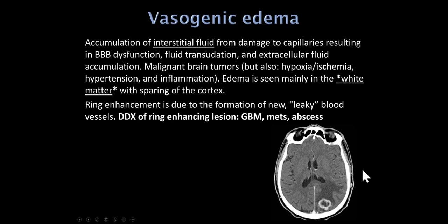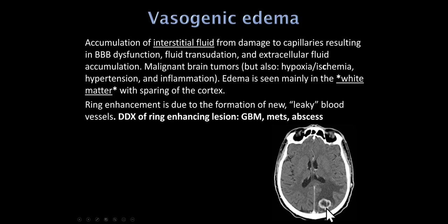Vasogenic edema is often due to a mass like a brain tumor but can be seen in other conditions. Fluid accumulates in interstitial locations — classically white matter — sparing the cortex, due to damaged capillaries causing interstitial fluid. We also see ring enhancement of a lesion caused by formation of immature, leaky blood vessels around the mass. A ring-enhancing lesion suggests one of three things: a malignant brain tumor like glioblastoma, a metastatic tumor, or an abscess.